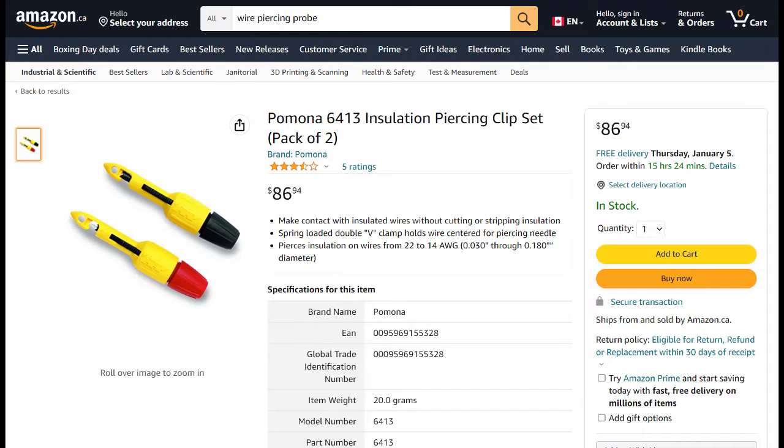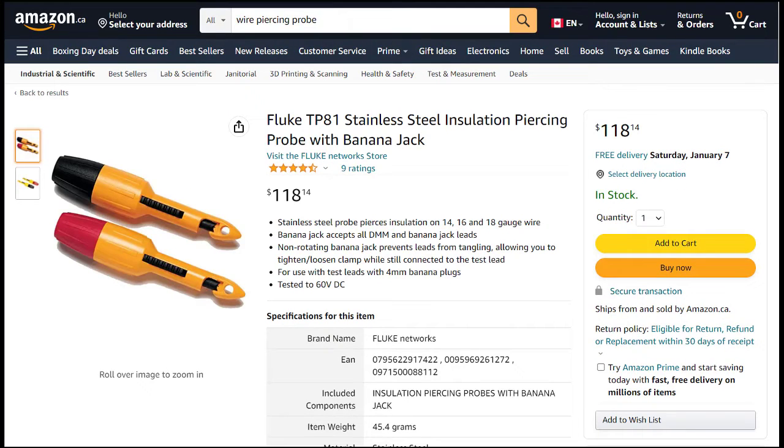They're a little easier to order from Amazon, and they're the same Pomona brand that is on the AES Wave site. But still, that's $87 plus tax. And here is a fluke look-alike. I mean, that's ridiculous.